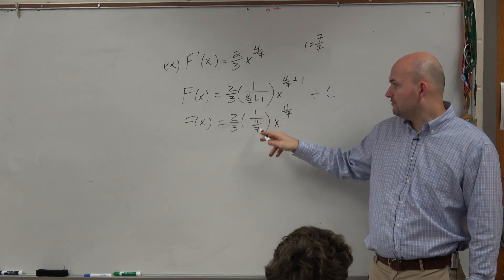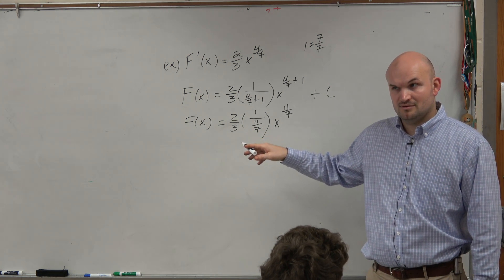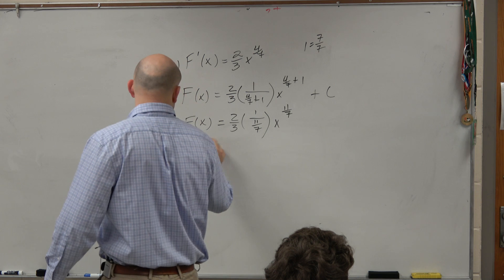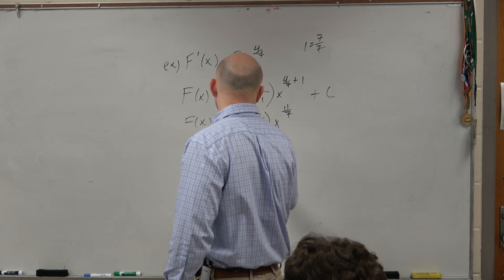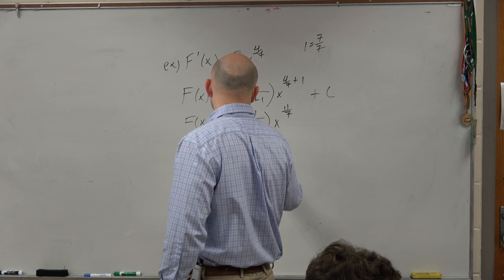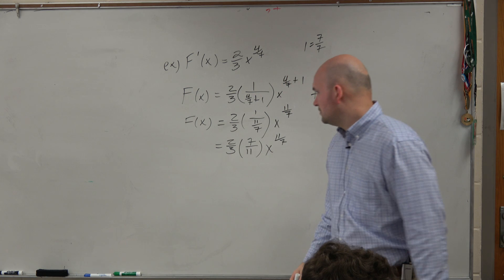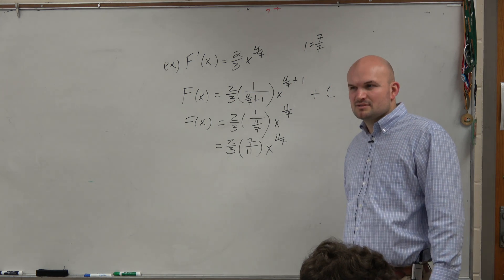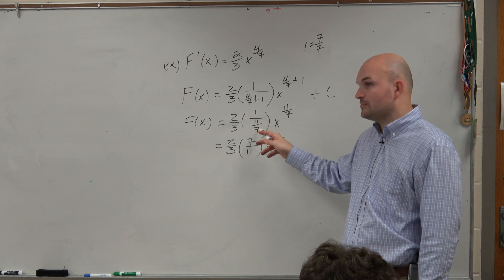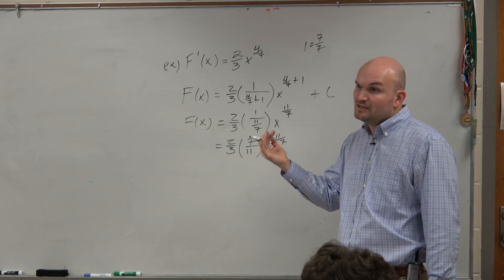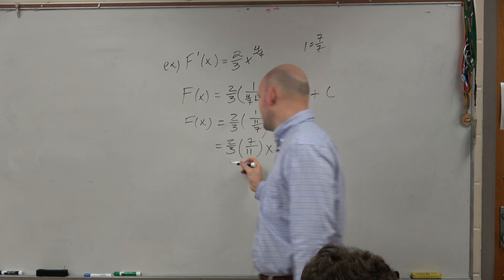Now, 1 over 11 sevenths is really the same thing as just the reciprocal. Just be careful with the inverse use of that. It is the multiplicative inverse. But a lot of times, we don't like using technically the inverse as a word just because it can be confusing. But does everybody see how you're just basically reciprocating that, which is the multiplicative inverse in that case? Does everybody see that, how that works? And then you just obviously multiply that across.